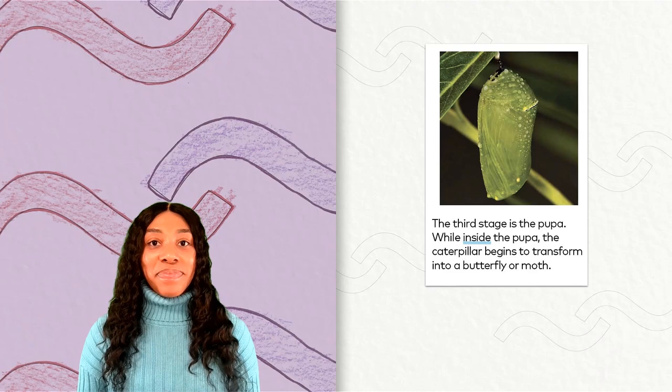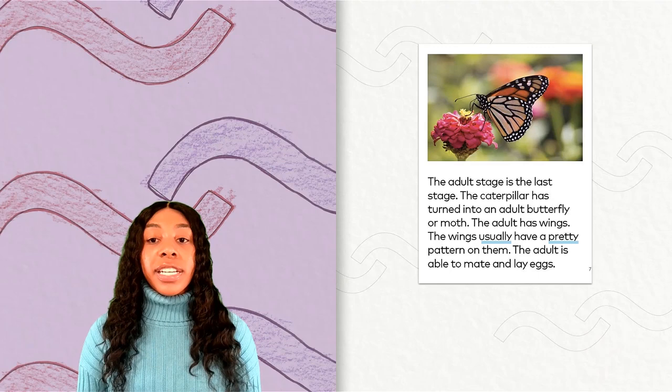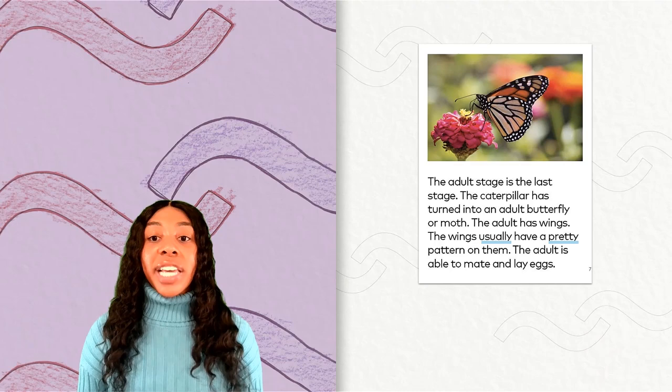The adult stage is the last stage. The caterpillar has turned into an adult butterfly or moth. The adult has wings. The wings usually have a pretty pattern on them. The adult is able to mate and lay eggs. We have two high frequency words on this page: usually and pretty.